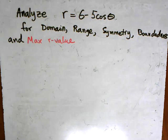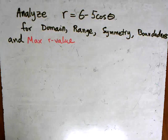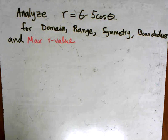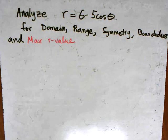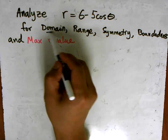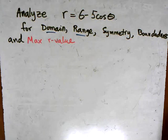Hello pre-calculus students. We are going to analyze a polar graph today and we're looking at the equation r = 6 - 5cos(θ), and we're looking for domain, range, symmetry, boundedness, and max r-value.